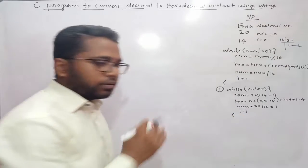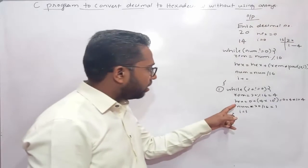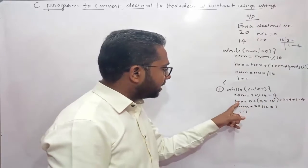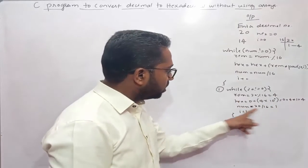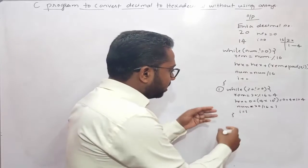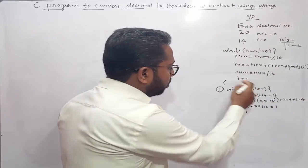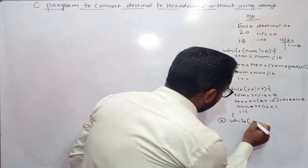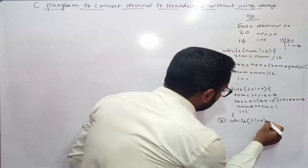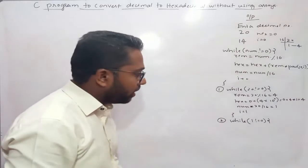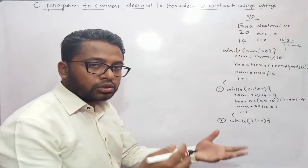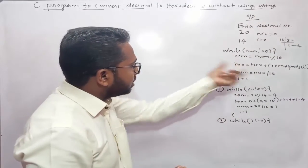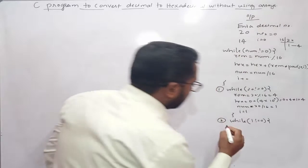After the first iteration, we have value 4 stored inside variable hex and 1 inside num. Now again 1 gets passed to the while loop in the second iteration. While 1 is not equal to 0, condition true. That's why control will come inside this while loop to perform these tasks.